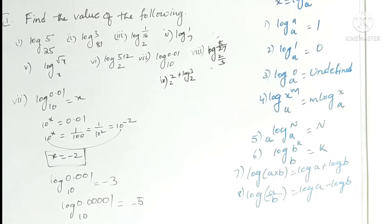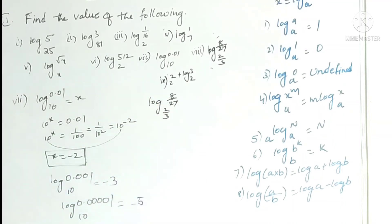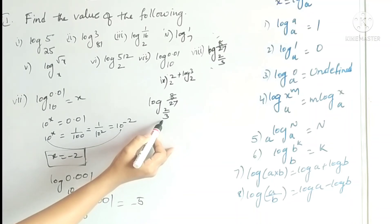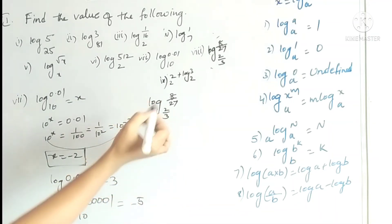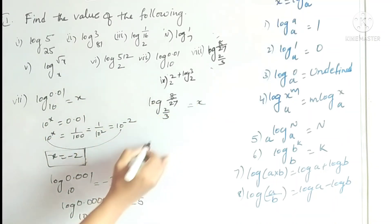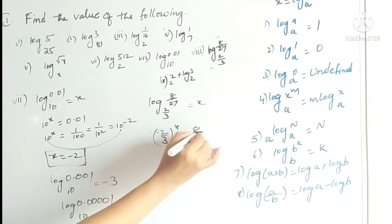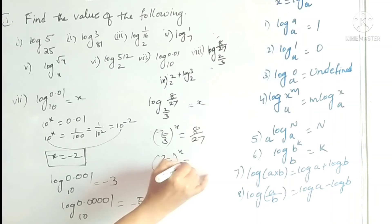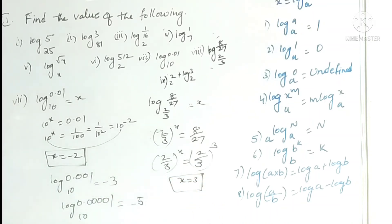The eighth problem is log(8/27) base(2/3). How many times must we raise 2/3 to get 8/27? Since 2×2×2=8 and 3×3×3=27, the answer is 3. To write it formally: let it be x, then (2/3)^x equals 8/27. Writing 8/27 as (2/3)³, we get x equals 3.